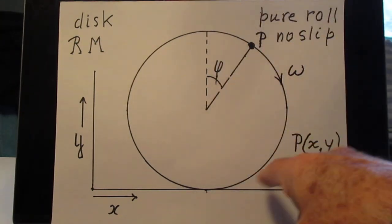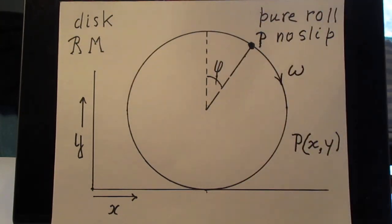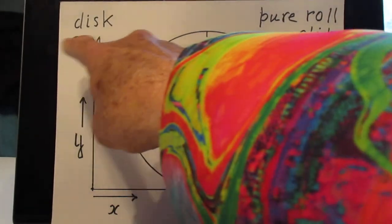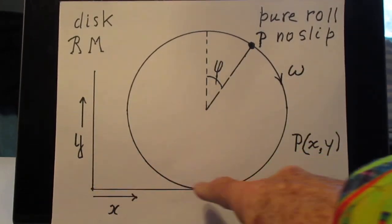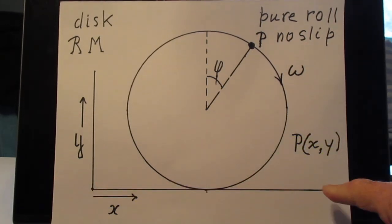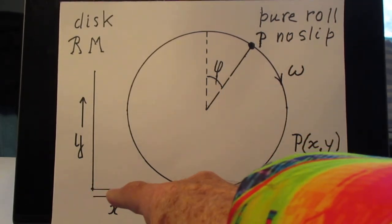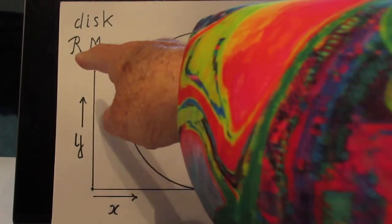This is a disk, solid disk, radius r and mass m. This is the horizontal surface. I call this the x-direction and this the y-direction.